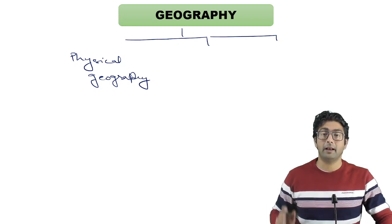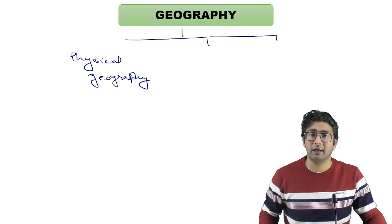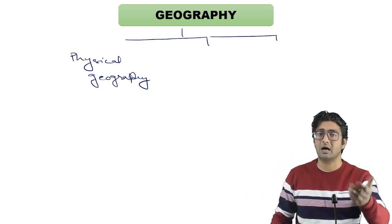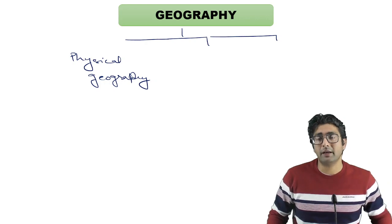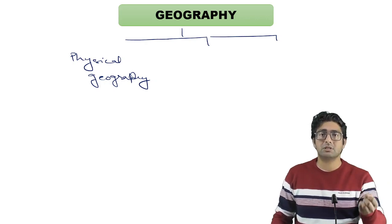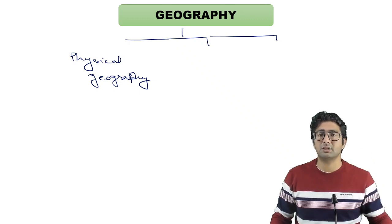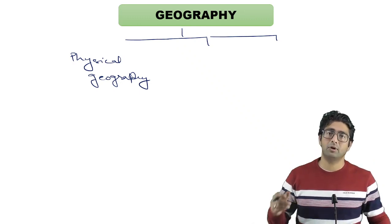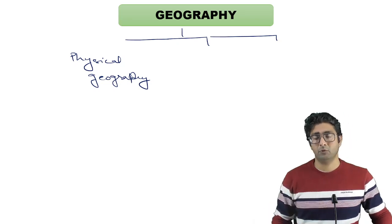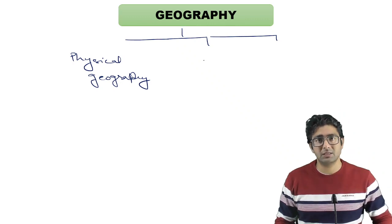In the context of India specifically, if we study the mountain systems — the Himalayas, the Southwestern Ghats, the Eastern Ghats, the Deccan Plateau, and the different island groups — their formation, current situation, and aspects — then we are studying the physical aspect of India. This is why Physical Geography is a very important pillar of geography.